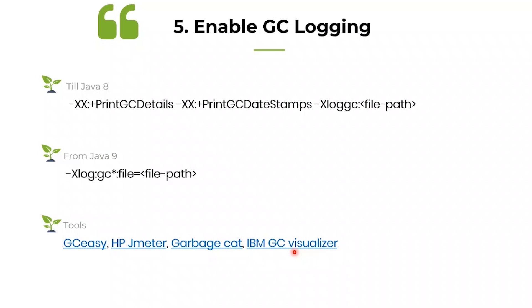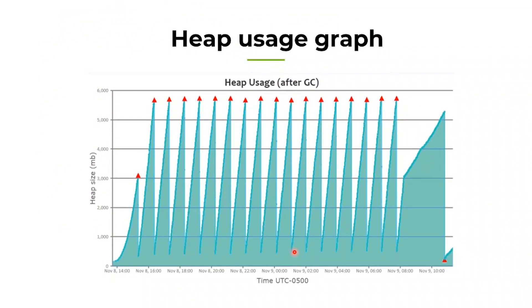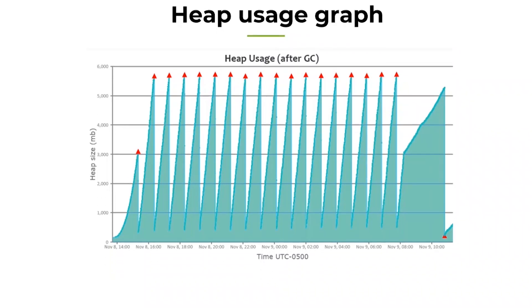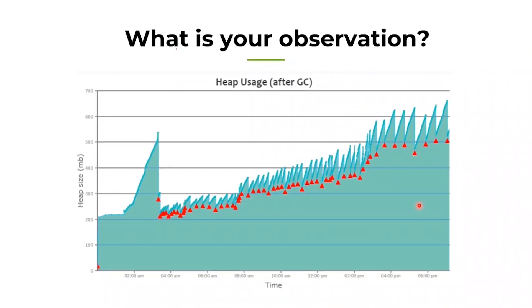Here is a heap usage graph of a very healthy JVM. You can see full GC events happening and then memory dropping all the way to the bottom. This graph is generated by passing GC logs through the GCeasy tool. You can see this beautiful sawtooth pattern — full GC runs, memory drops to the bottom, repeatedly.